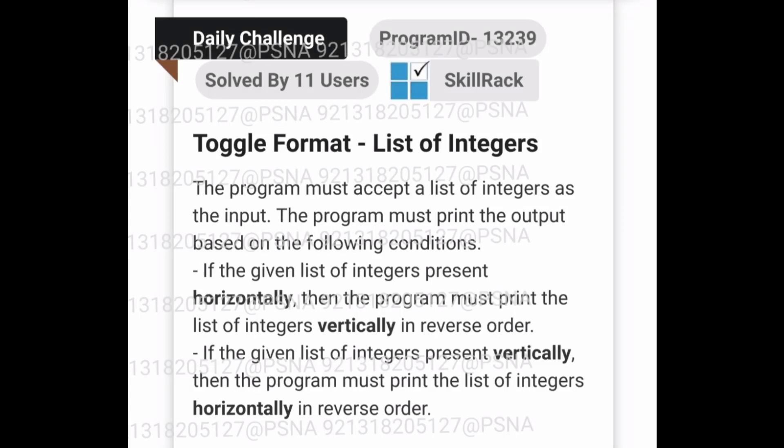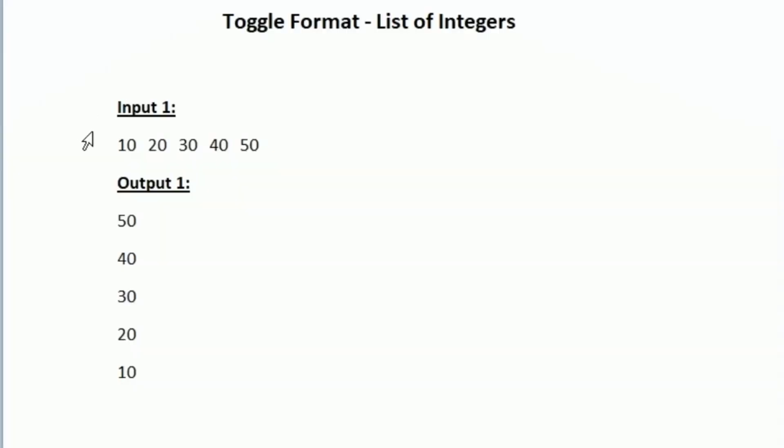This is the question asked in today's SkillRack daily challenge. We will be given a list of integers as input, either in horizontal or vertical direction. Our task is to first reverse the list of integers, and since the input is given horizontally, we have to print our output vertically.